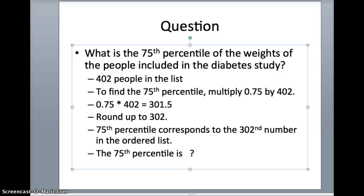This time we'll ask, what is the 75th percentile of the weights of the people included in the diabetes study? Still 402 people on the list. To find the 75th percentile, we multiply 0.75 by 402. 0.75 times 402 is 301.5. That does not represent a whole number. It has a decimal.